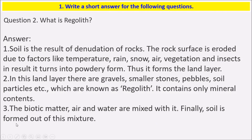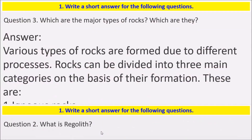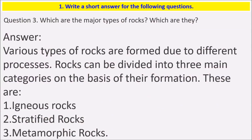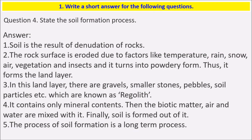Which are the major types of rocks? The various types of rocks are formed due to different processes. Rocks can be divided into three main categories on the basis of their formation: igneous rocks, stratified rocks, and metamorphic rocks.